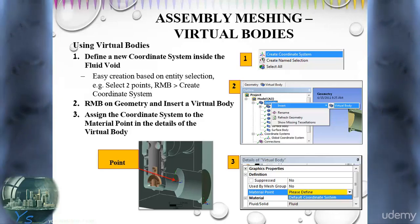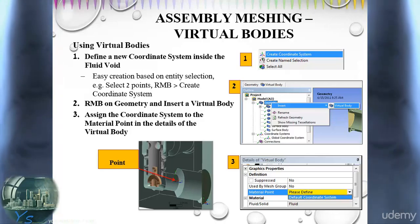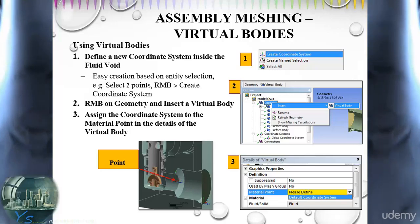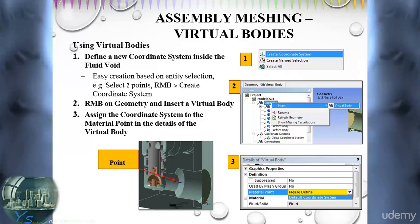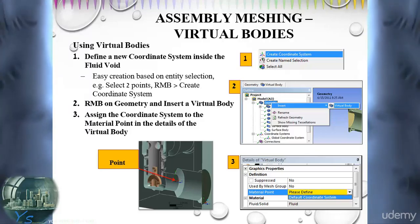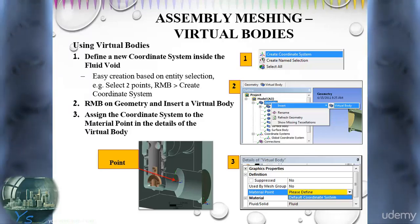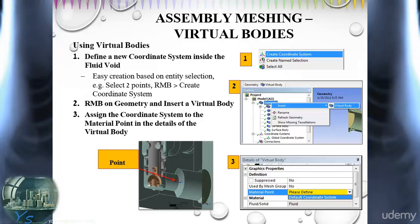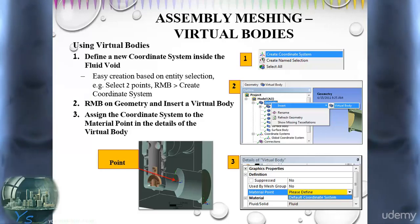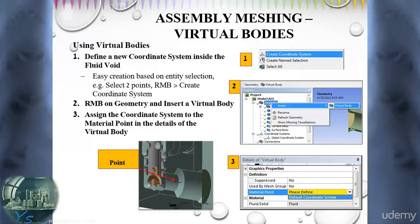Fluid meshing does not have a solid description. Instead, all cell zones are defined by their boundaries. Therefore, it is no problem to set the location of the coordinate system within the solid body which later forms the fluid, as long as it is outside of the real solid body, which could be some sort of vehicle or structure.